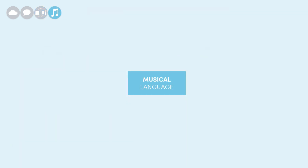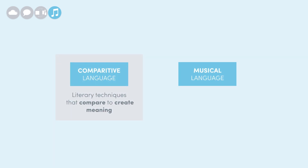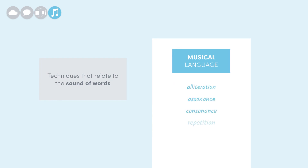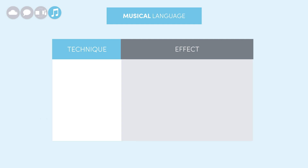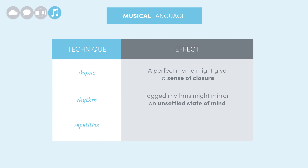Next up is what I'm calling musical language, which is a little more tricky. In addition to comparative language, we need to consider the heaps of techniques that relate to the sound of words, such as alliteration, assonance, consonance, repetition, rhyme, and rhythm. These techniques don't compare things like comparative language does, but they still shape meaning in non-literal ways. For instance, a perfect rhyme might give a sense of closure, jagged rhythms might mirror an unsettled state of mind, or repetition might emphasize the importance of something.